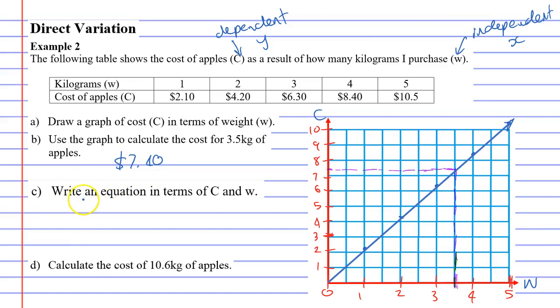Now, question C wants you to write an equation in terms of C and W. And this is where you use your direct variation equation, y equals kx. Remembering the dependent is y, so C is y, capital C. And x is your W, since x represents your independent variable. So how are we going to find k? Because we need to replace k with a number. And because we're doing graphs, we're going to find the gradient, because k is also the gradient.